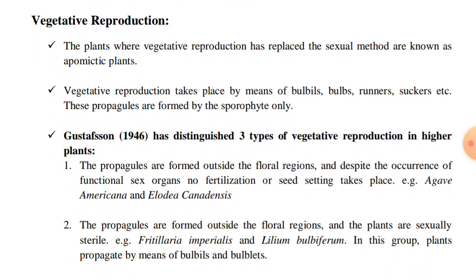Regarding vegetative reproduction: the plants where vegetative reproduction has replaced the sexual method are known as apomyctic plants. In apomyctic plants, sexual reproduction does not take place and propagation occurs by vegetative means. The vegetative reproduction takes place by means of bulbils, bulbs, runners, suckers, etc. These propagules are formed by the sporophyte only.